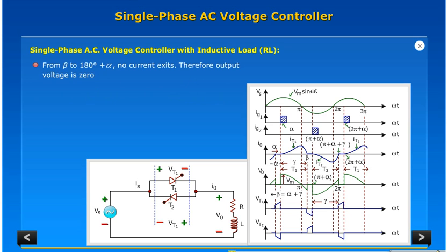From beta to 180 degrees plus alpha no current exists. Therefore output voltage is zero. Thyristor T2 is turned on at 180 degrees plus alpha greater than beta. Current starts building up in reverse direction.